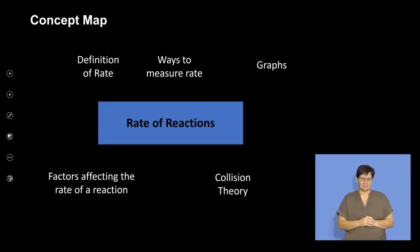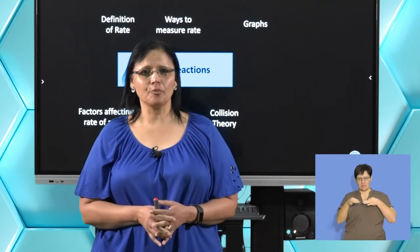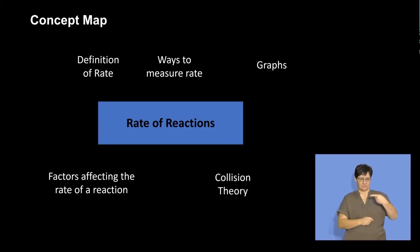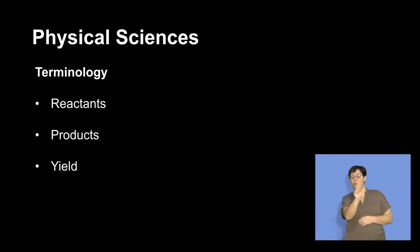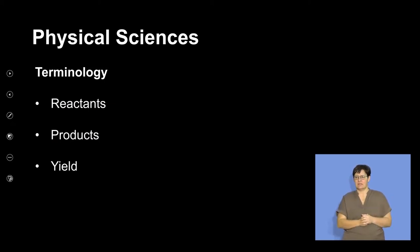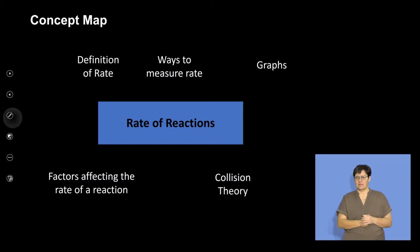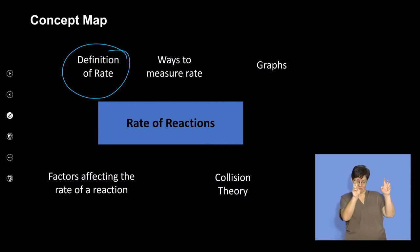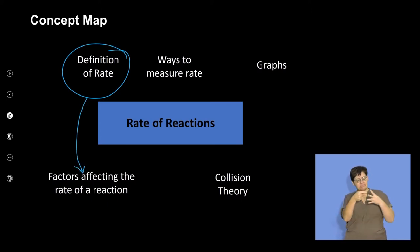I'm going to take you through the concept map so you can see what we plan on doing during this lesson. Firstly, I would like to look at the definition of rate of reaction, and then we will link that definition of rate of reaction to the factors affecting the chemical reaction.